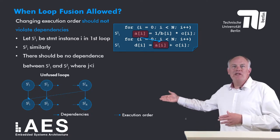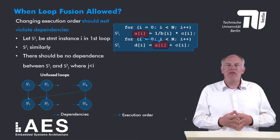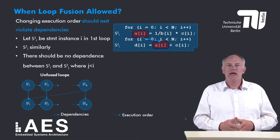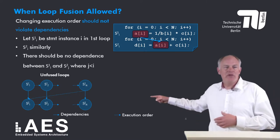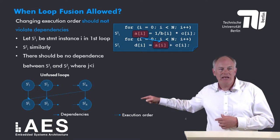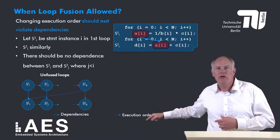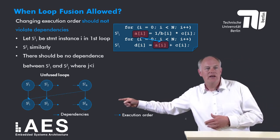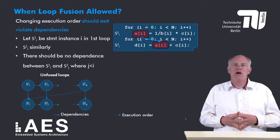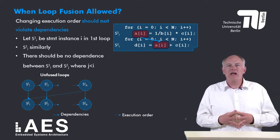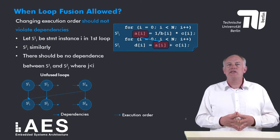This graph represents the dependencies and the execution of the original unfused loops. Each node represents a statement instance. The straight arrows represent the dependencies going from top to bottom, and the dashed arrows illustrate the execution order. First, all statements of all instances of statement S1 are executed, and then all instances of statement S2 are executed.